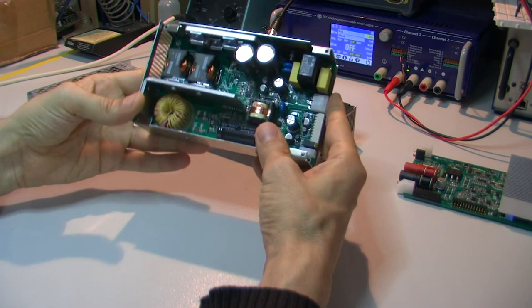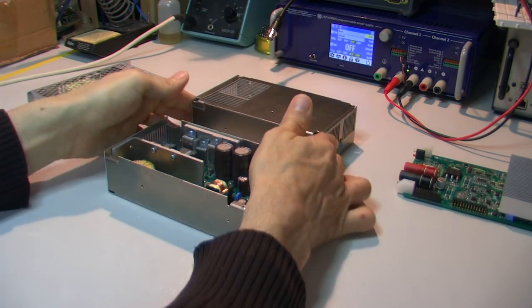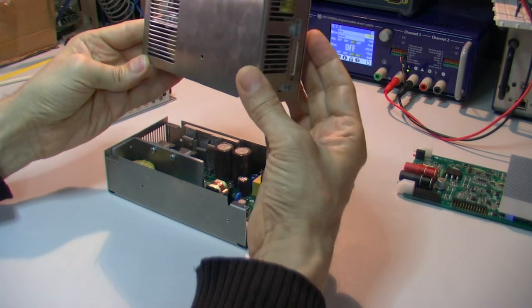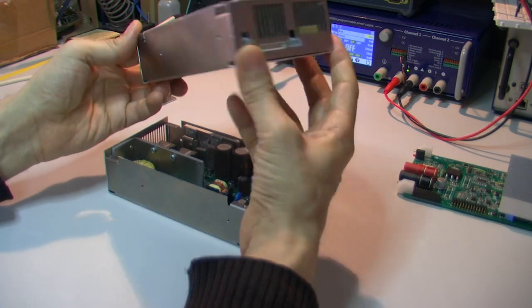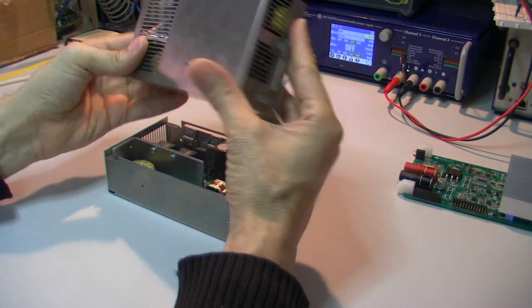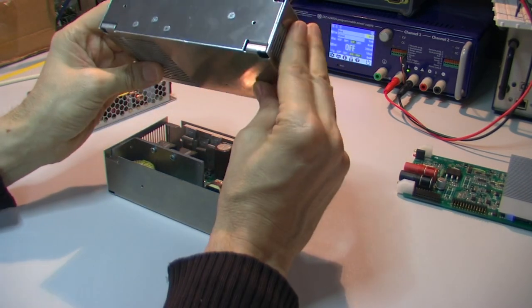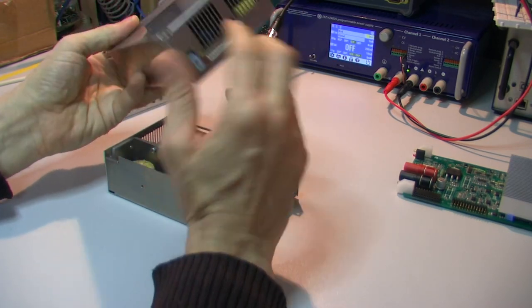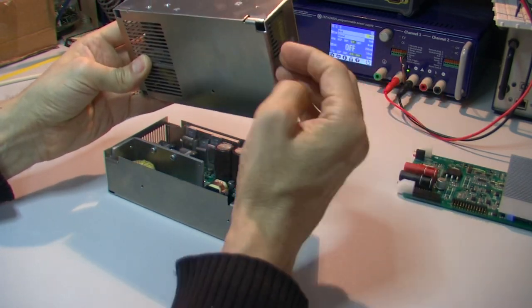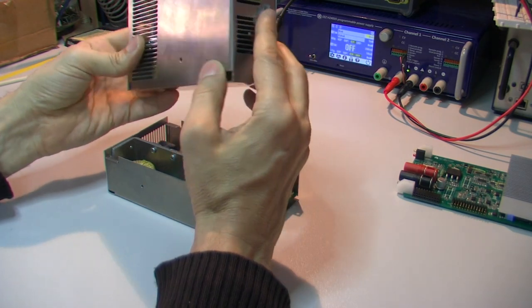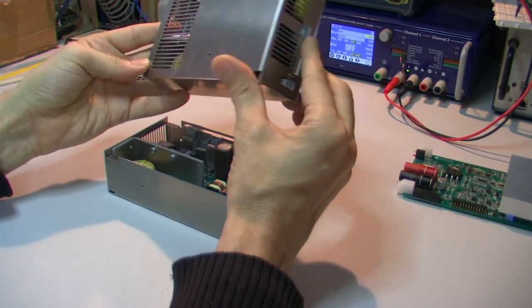It can provide in this chassis continuously 3 to 3.5 amps without additional cooling and if you want to go to the 5 amps we need to push some air with some external DC fan.